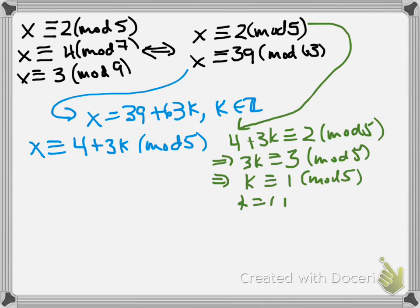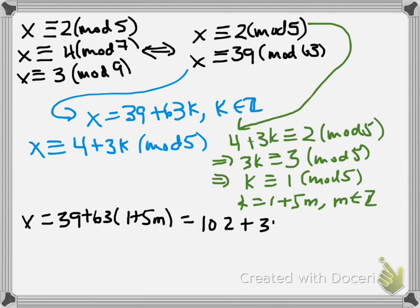Okay, so that would be that k is 1 plus 5m for m an integer, so now x is 39 plus 63 times 1 plus 5m. Multiplying that out, we get x is 102 plus 315m, or x is congruent to 102 mod 315. I'll leave it to you to go off and check that 102 satisfies all three of the congruences that we started with.